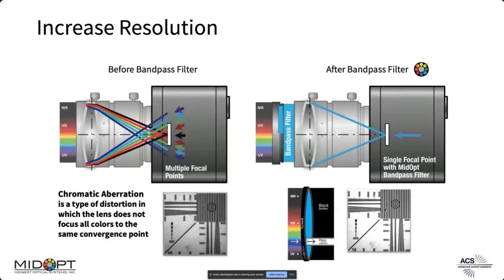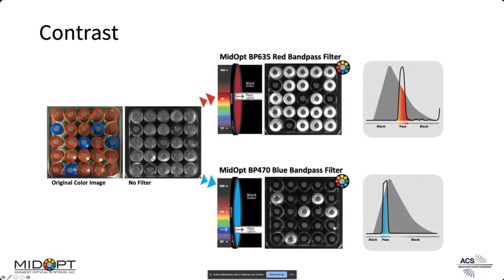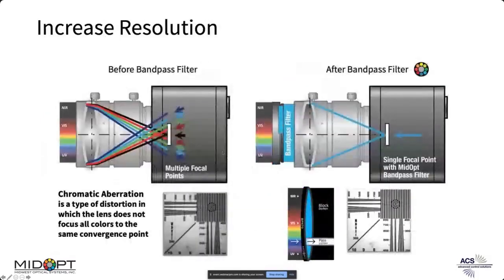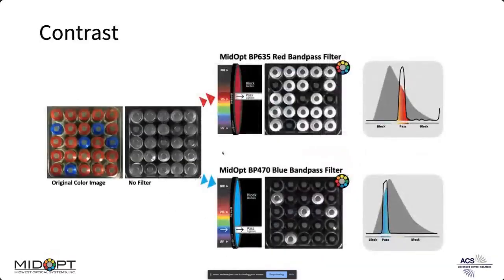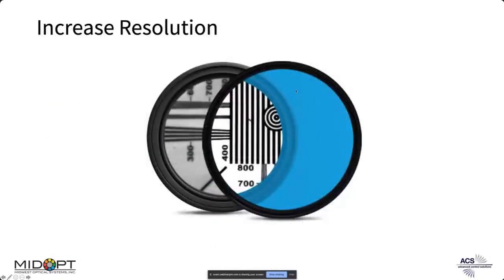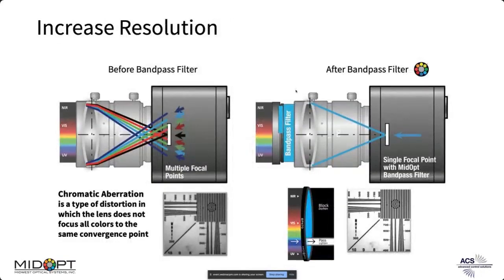Question from the chat: does using these filters and bandpass give an advantage to a monochrome camera over a color camera? Yes — lots of customers start with a more expensive color camera for a color sorting application, but we've seen much better results with a monochrome camera and a bandpass filter. Customers actually switch that way — they save money, reduce overall complexity, avoid a lot of post-processing, and the contrast pops out much clearer.